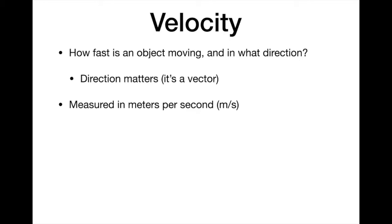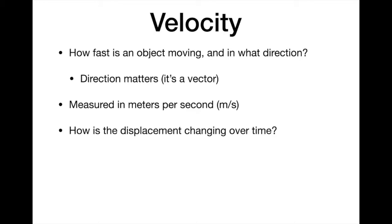Velocity is how your displacement is changing over a certain amount of time. Velocity V equals the change in displacement divided by the change in time. Change in meters over change in seconds gives us meters per second. That delta symbol means 'change' — you take your current value minus your starting point.